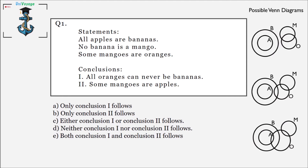For the first conclusion, 'all oranges can never be bananas': looking at the last two statements, 'no banana is a mango' and 'some mangoes are oranges,' we can always see that some part of orange can never come inside bananas. So conclusion one is true. For conclusion two, 'some mangoes are apples': apples are inside bananas and mangoes cannot be bananas, so they cannot be apples. Conclusion two is not true. The answer is option A — only conclusion one follows.